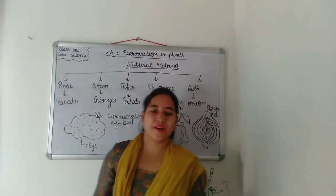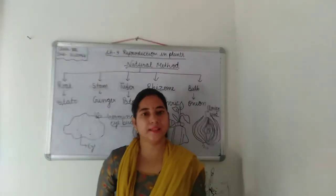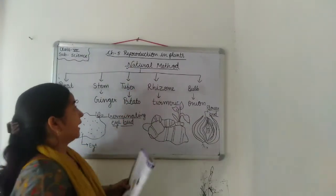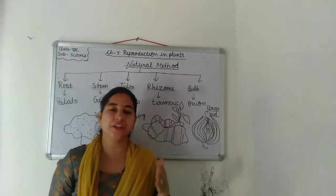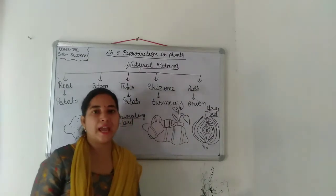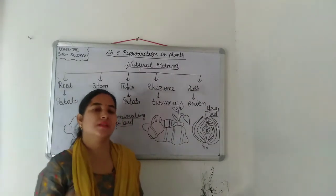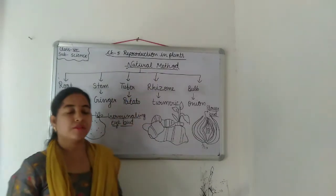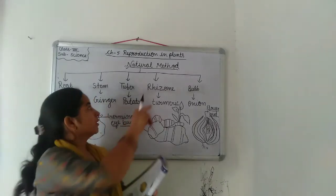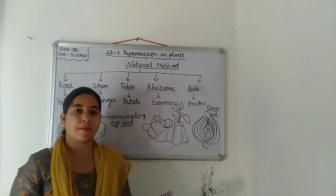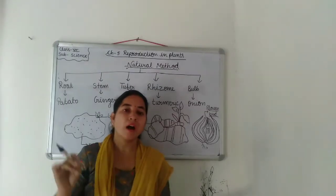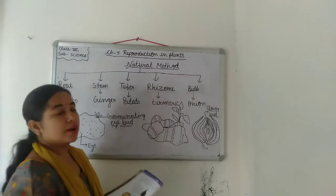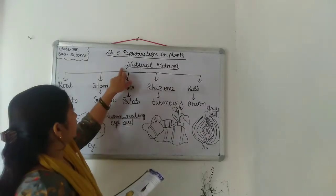Good morning class, how are you? I hope you all are well and healthy. Today in this lecture we will learn about natural methods of vegetative propagation. In the previous classes we have already discussed what are the means of vegetative reproduction and which types of methods we can use to reproduce a new plant. We have discussed natural methods and artificial methods. Now today we will focus on natural methods.